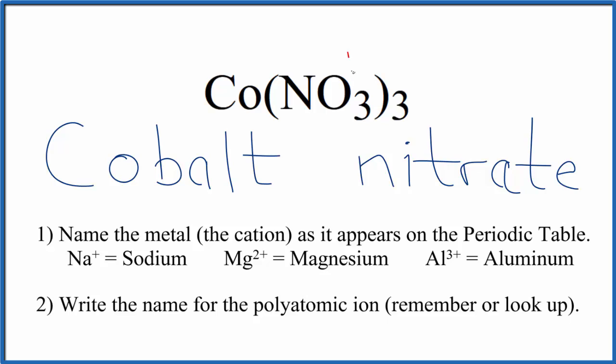So three times one minus equals three minus. The cobalt has to be three plus, so we're going to put a Roman numeral III here between the names.